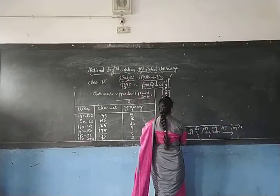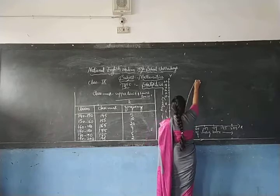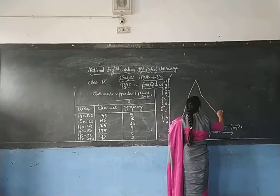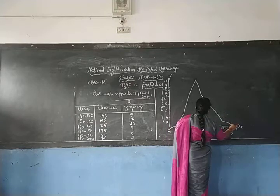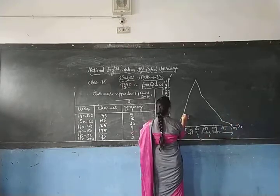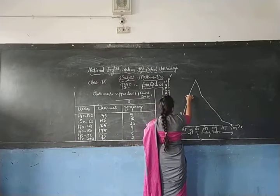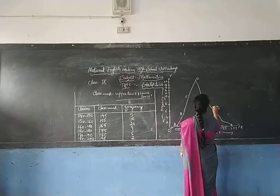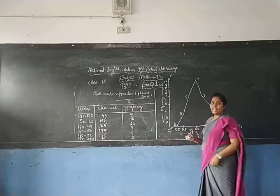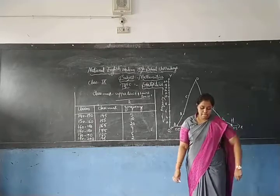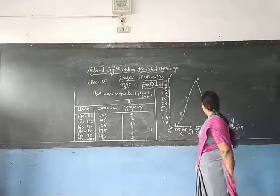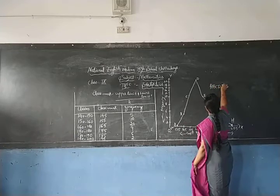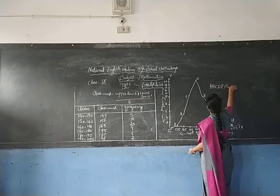Now we have to join all the plotted points with line segments to form the polygon. We label the points as A, B, C, D, E, G, H. So the required frequency polygon is A-B-C-D-E-G-H, connecting all the plotted points including the two extended points on the x-axis.